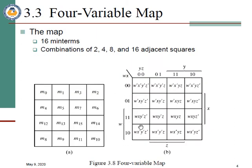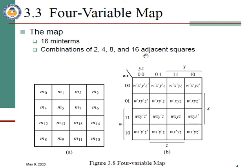For four variable K-maps, 2⁴ equals 16 — so a 16-cell K-map is drawn. On this side there are two variables A and B, and on this side two variables C and D. Mapping goes m0, m1, m2, m3, m4, m5, m6, m7, then skipping down to m8, m9, m10, m11, then m12, m13, m14, and m15. This is how the 16-cell four variable K-map is drawn.